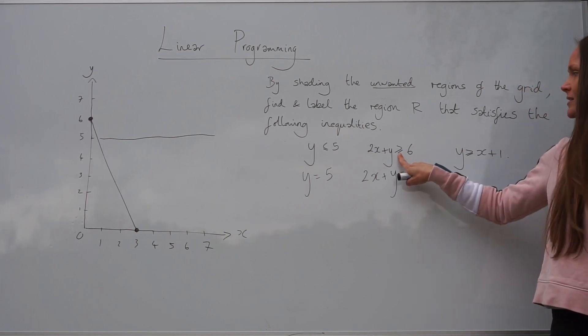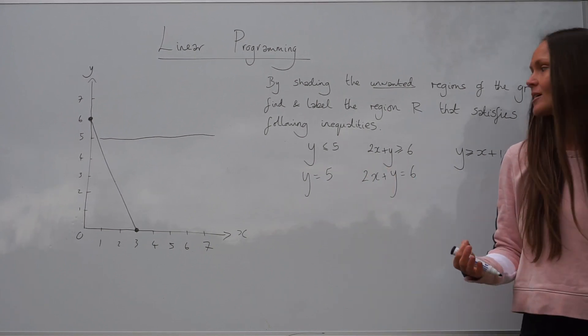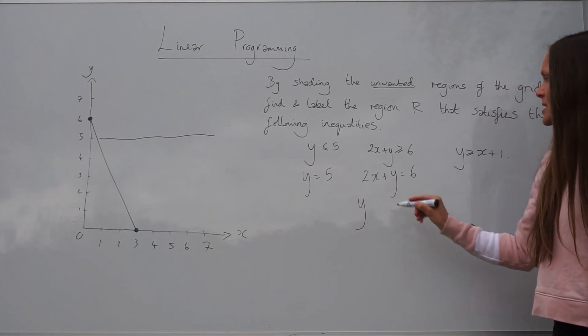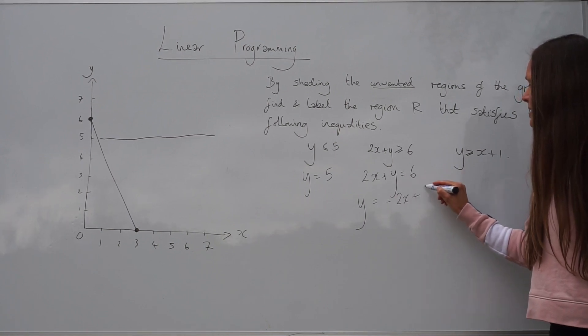Just change the inequality sign to an equal sign. And if I rearrange this equation to make y the subject, so it's in the format y equals mx plus c, it becomes y equals negative 2x plus 6.